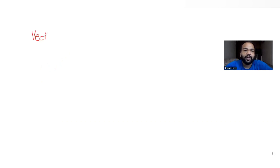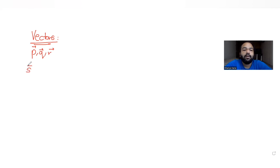Hi guys, I hope you are all doing well. Today's question is based on the topic of vectors. We have been told that p, q, r are three non-coplanar vectors. Let s̄ be a vector whose components along p, q, and r are given as 4, 3, and 5. So I can write s̄ as 4p plus 3q plus 5r, because these are the components along the directions p, q, and r.